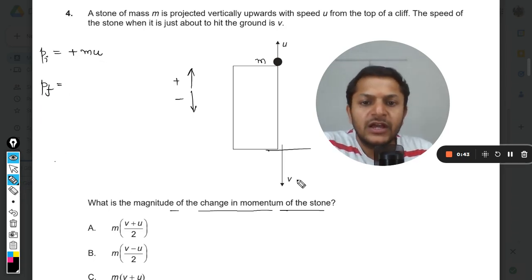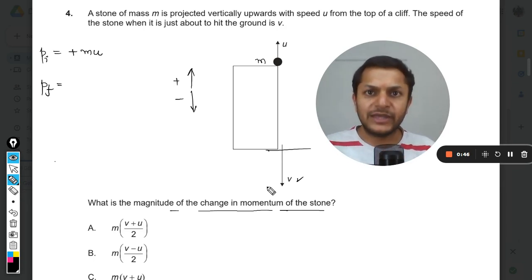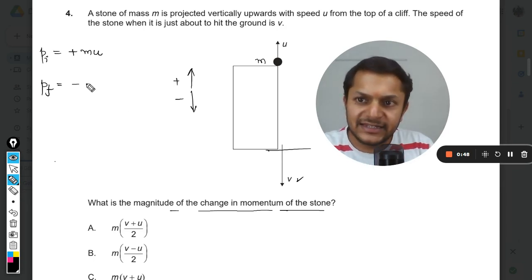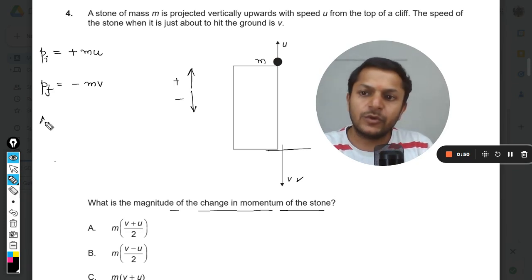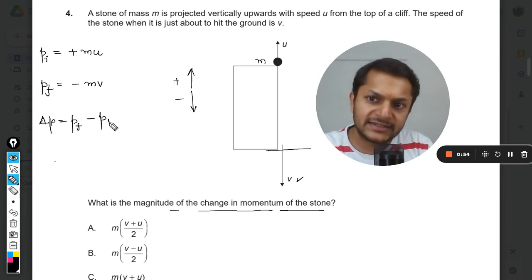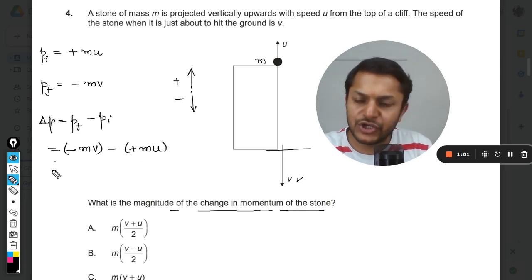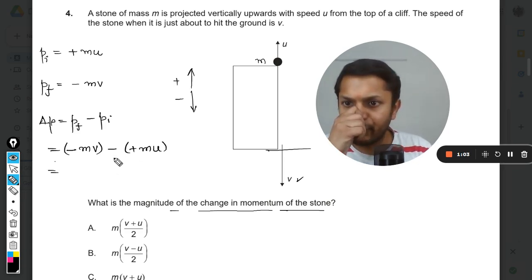What is the final momentum? Finally, the velocity is given as v and the mass is going to be m, but it is in the negative direction. So what is the change in momentum? That will be the final momentum minus initial. Clearly it will be this minus positive mu.